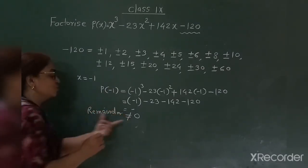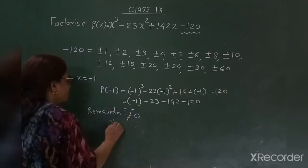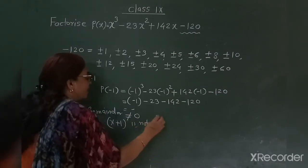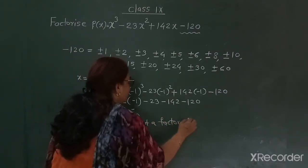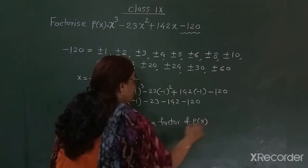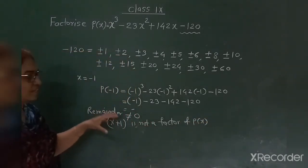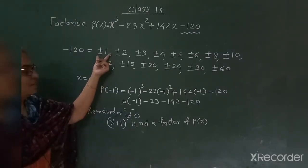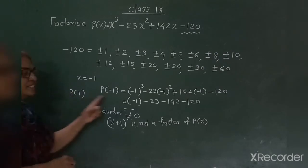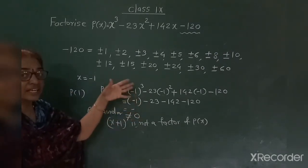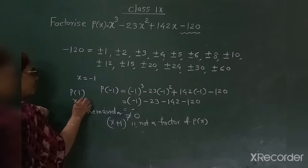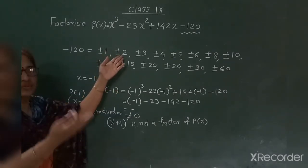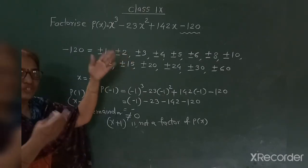If the remainder is not 0, it means x plus 1 is not a factor of P of x — by the remainder theorem and factor theorem. So now we try the next factor. We find P of 1, solve it, and see if 0 comes. If it does, then x minus 1 will be a factor. If not, we try 2, then negative 2, then 3, negative 3, and so on.